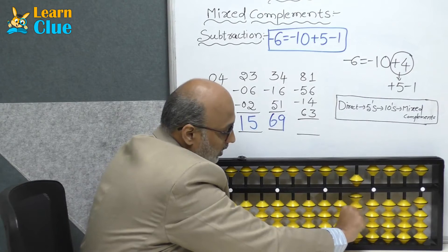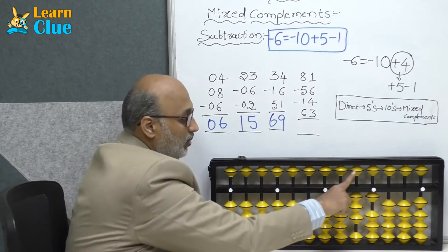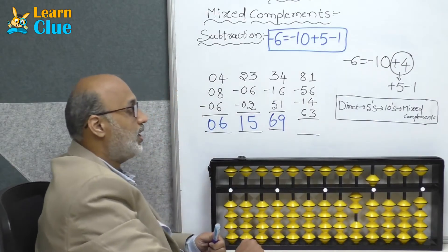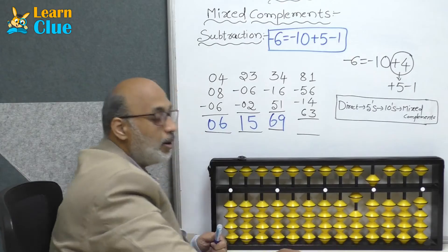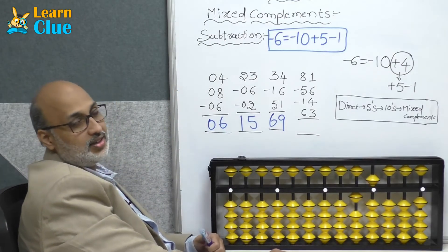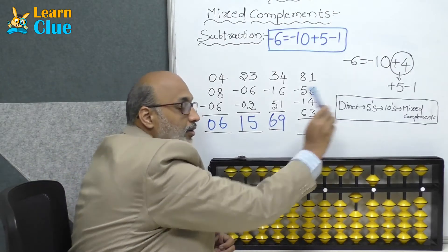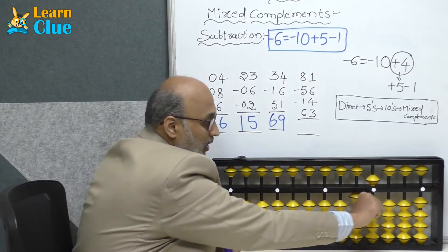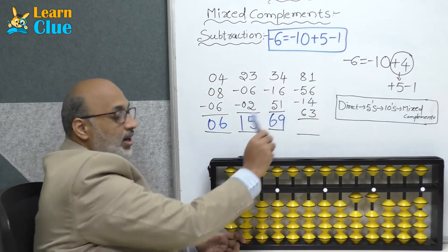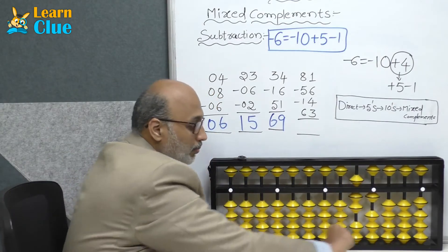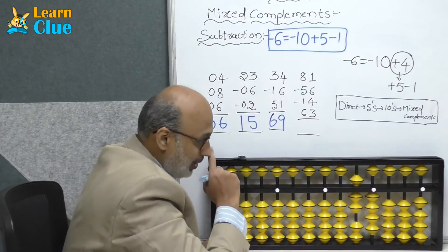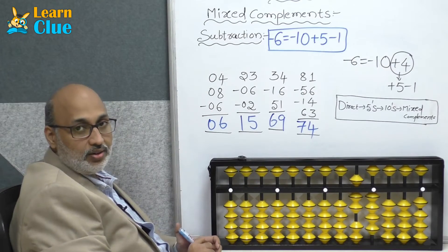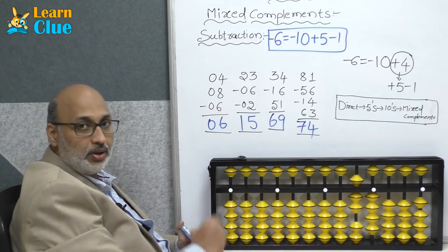Next problem: 81 minus 56. That's 80 plus 1, minus 50 minus 6. Minus 6 is nothing but minus 10 plus 5 minus 1. Then they are asking minus 14: minus 10 minus 4. For minus 4, think direct first, then 5's complements. Who is the friend of 4? It's 1. So plus 1 minus 5. Then they are asking plus 63: plus 60 plus 3, which is direct. The answer is 74. Students, you have to practice this one — practice all the problems in your app so that you will get perfect.